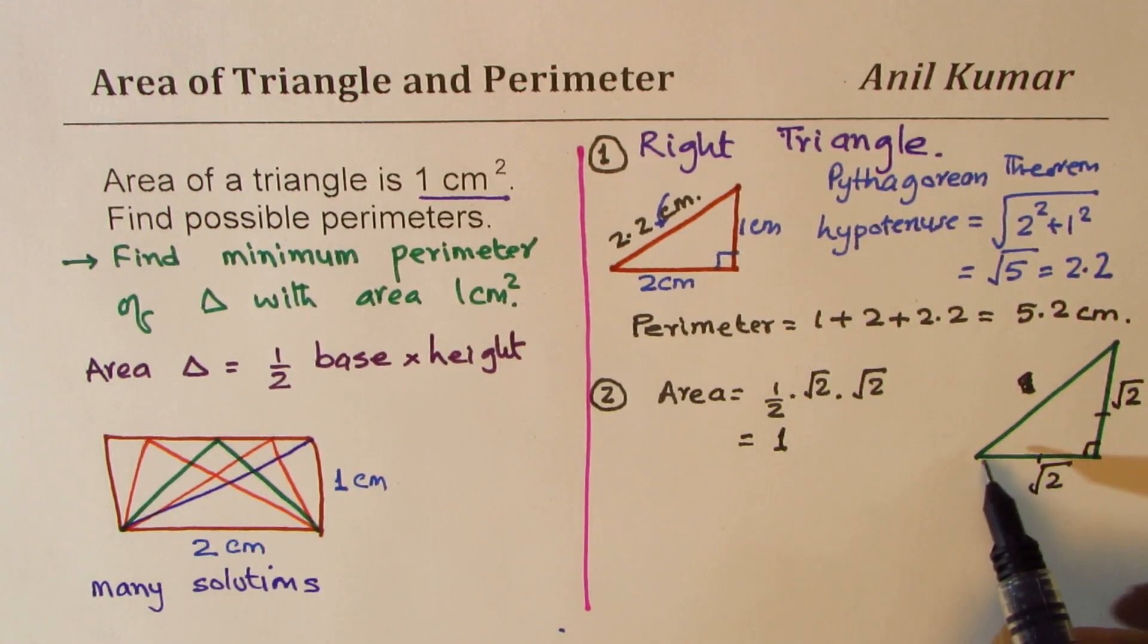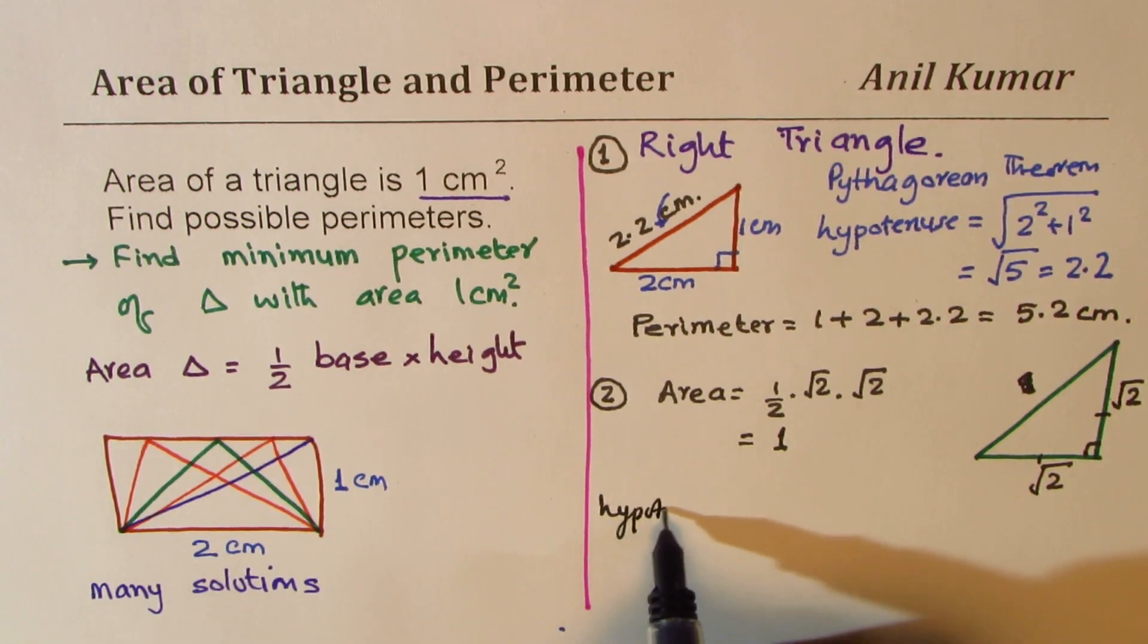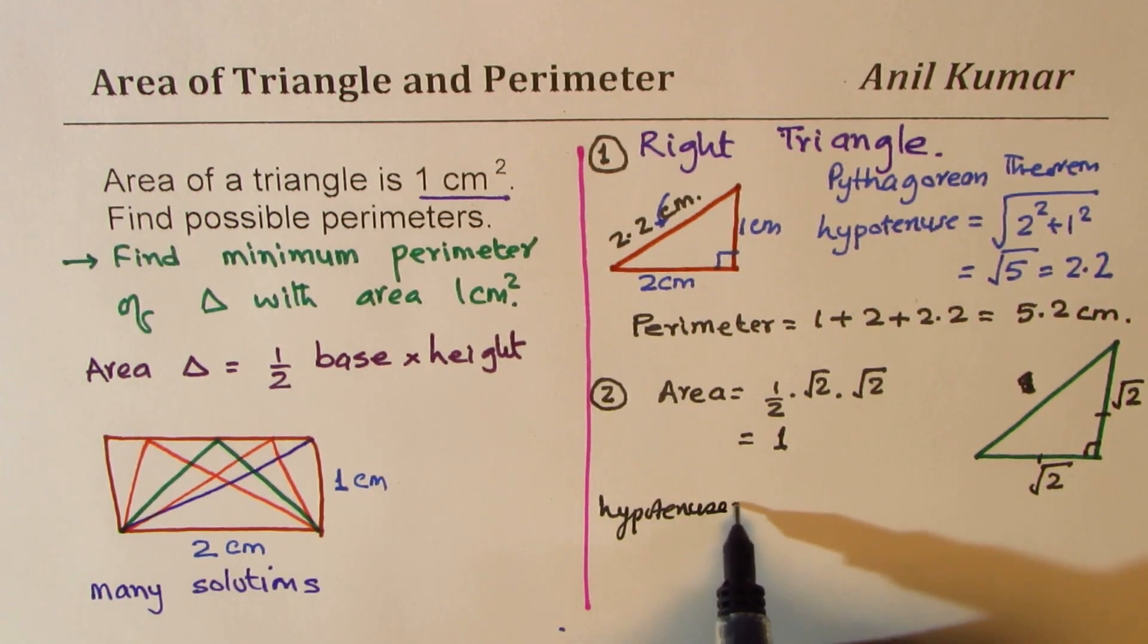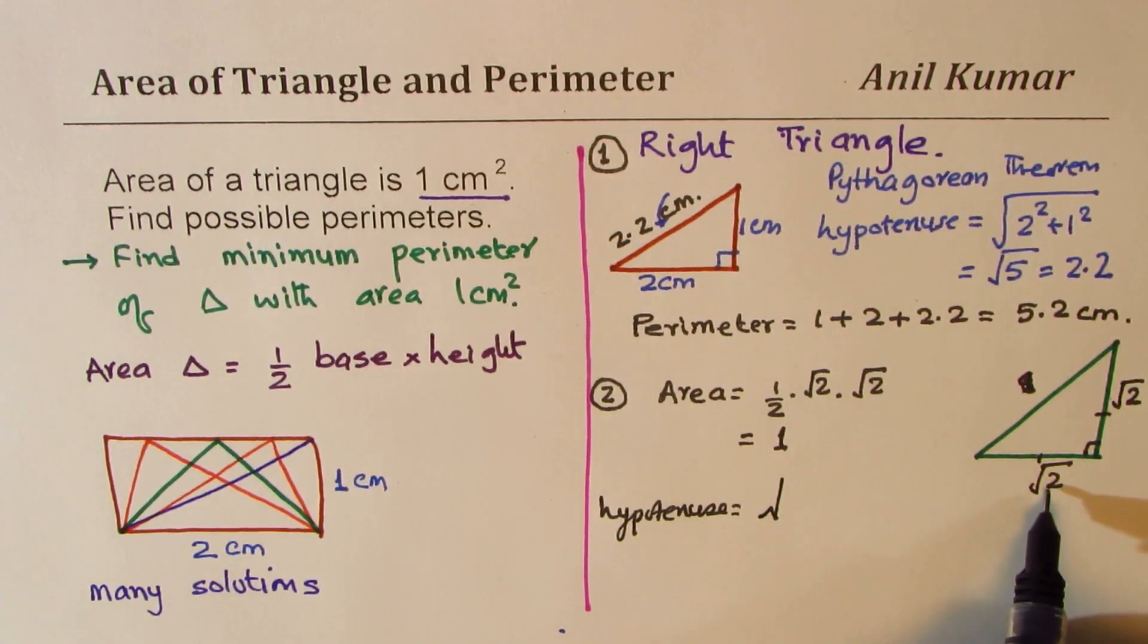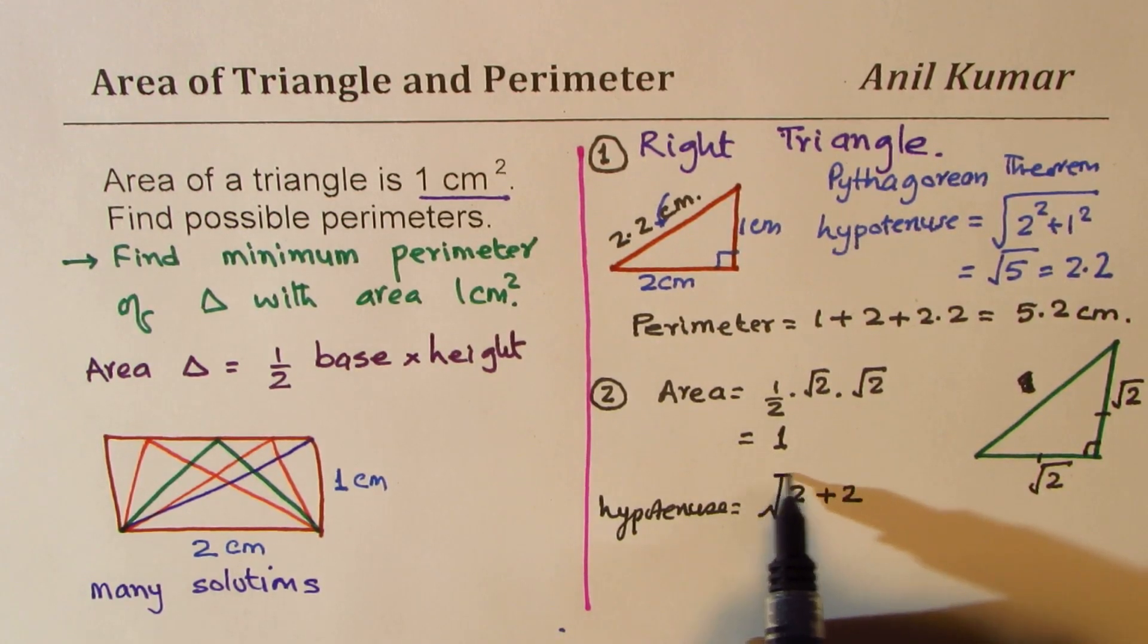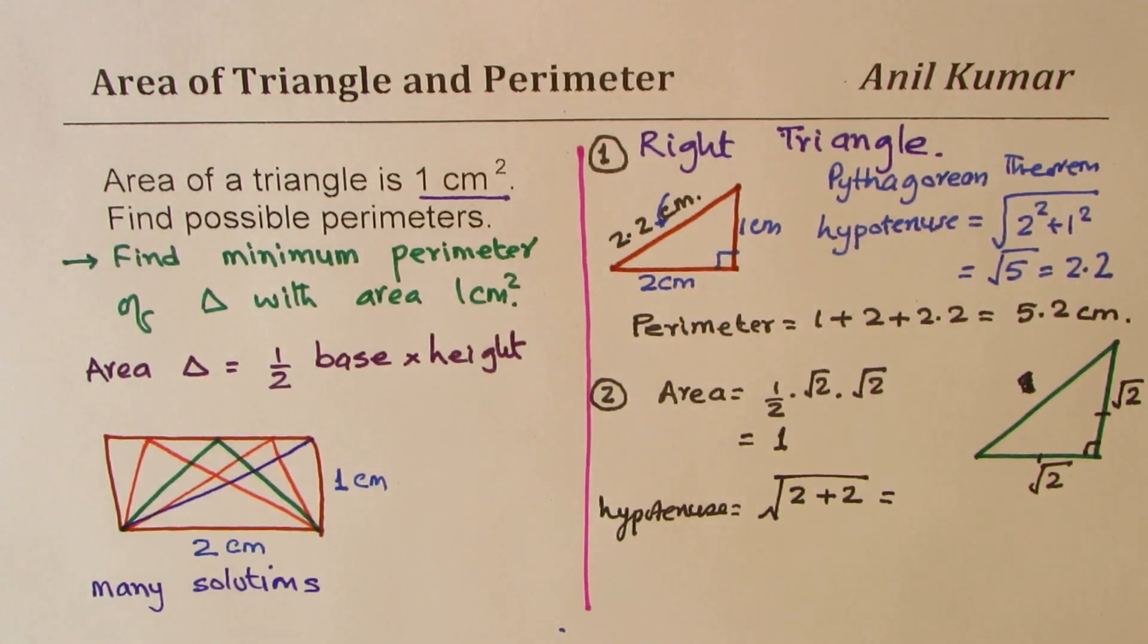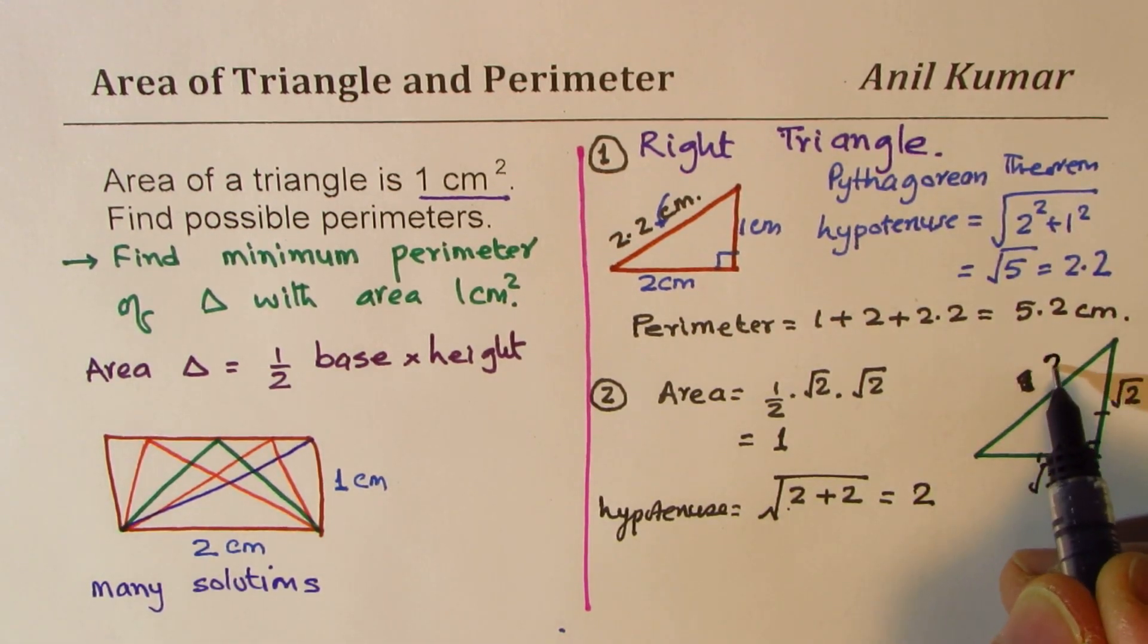So again, we do have a triangle whose area is one. Now let's find what the hypotenuse is. In this case, hypotenuse is square of these two and square root. So square of square root is the number two itself. So we get this as four square root, which is two. So we get hypotenuse as two centimeters.